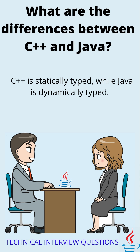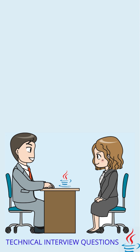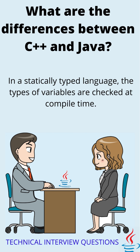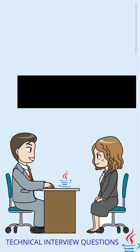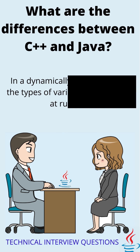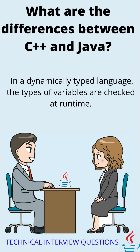The second difference is that C is statically typed, while Java is dynamically typed. In a statically typed language, the types of variables are checked at compile time. In a dynamically typed language, the types of variables are checked at runtime.